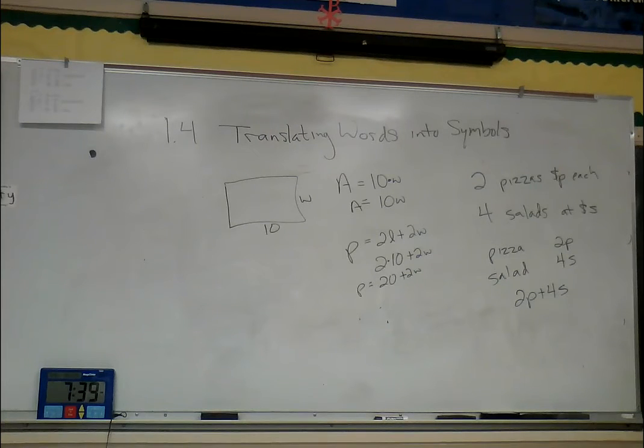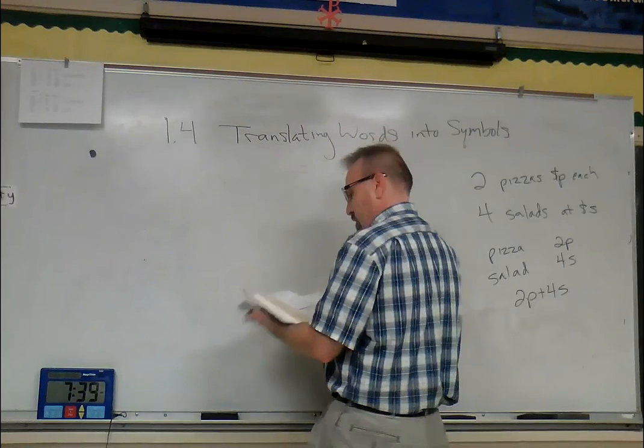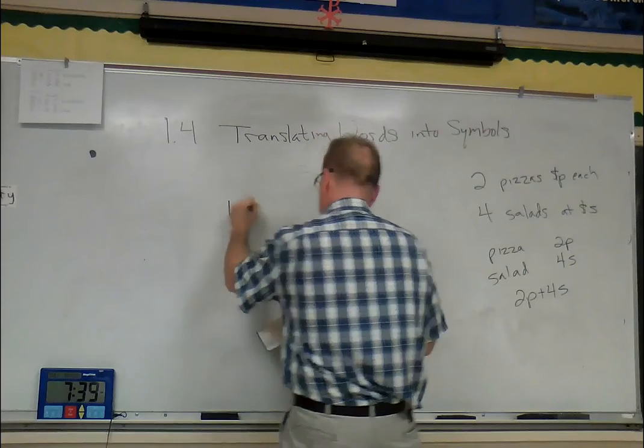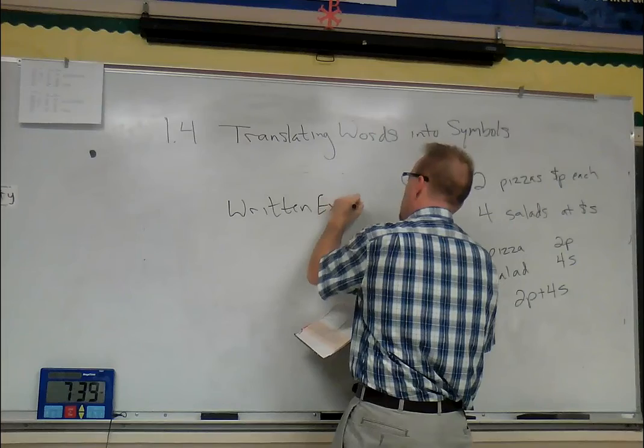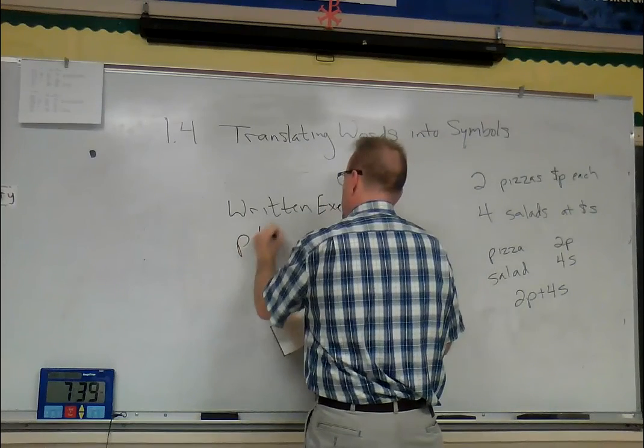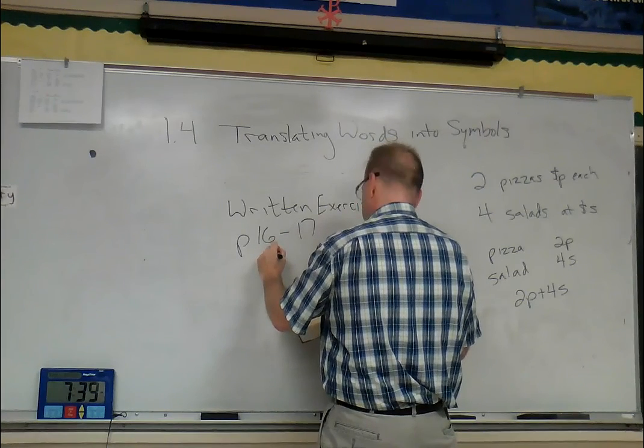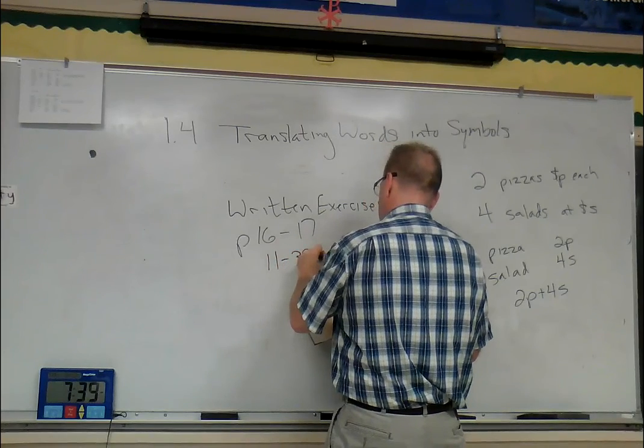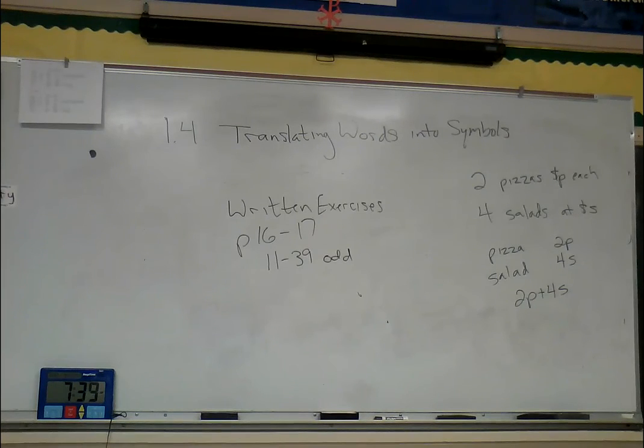So the best way to work on these - on pages 16 and 17, the written exercises, do 11 to 39 odd. We're going to skip the simpler ones at the beginning; they're easier. So we'll jump in at 11 and go to 39.